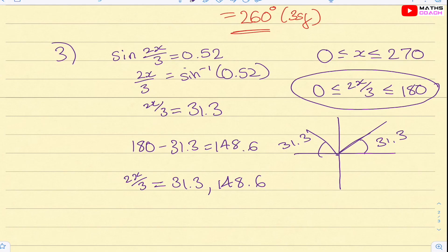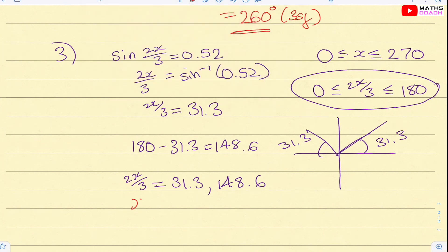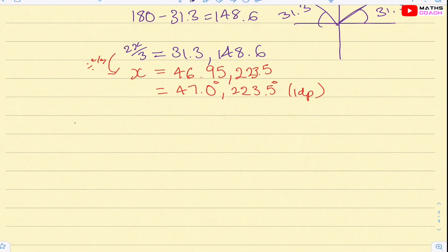But we don't want 2/3 x, we want x. So how do we do that? Well, all we do is to get from 2/3 x to x is to divide by 2/3. So if we're dividing this by 2/3, we're dividing all these solutions by 2/3. So 31.3 divided by 2/3 is going to give me 46.95 or 223.5 to 1 decimal place. That'll make it consistent.